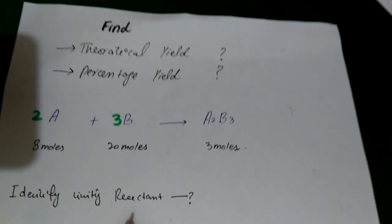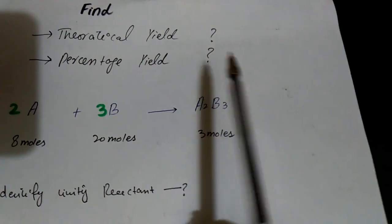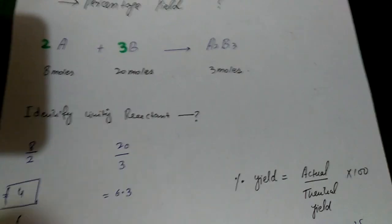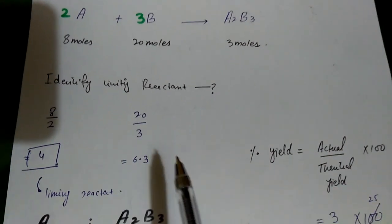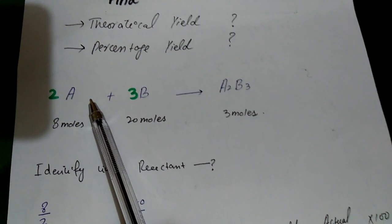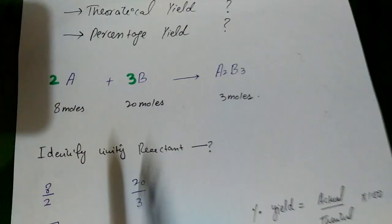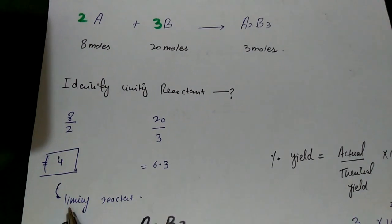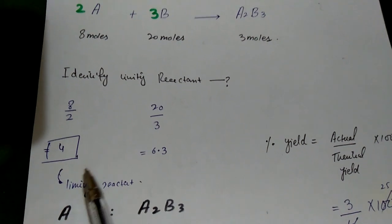Next we proceed to another important concept: finding theoretical yield or percentage yield. To find these, the first step is to find the limiting reactant. For the given reaction, we apply the same 3 steps — balance it, find the molecular mass, find the number of moles, and divide by the stoichiometric ratio to find the limiting reactant.